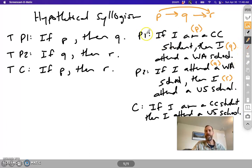And sure enough, premise one is true. And premise two is also true. Attending a Washington school, if you were to do that, you would be attending a U.S. school. And so because these premises are true, the conclusion cannot possibly be false. It follows necessarily. It just cuts out this middle term and leads us straight from my initial antecedent to my final consequent.